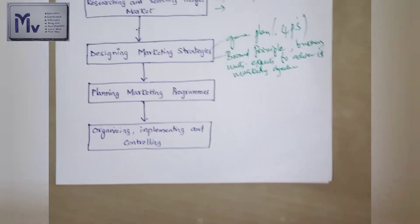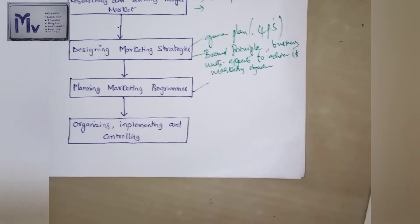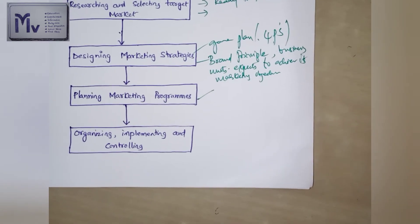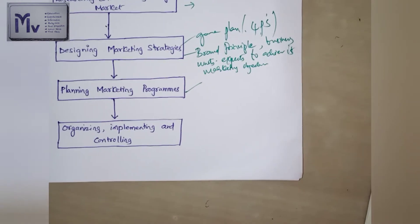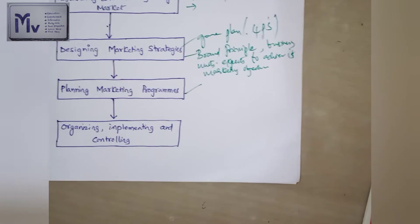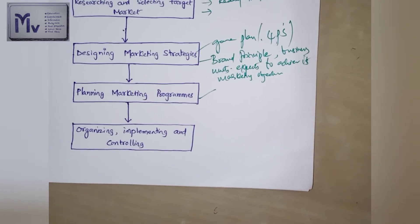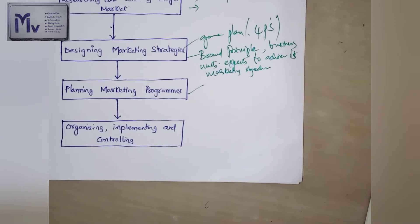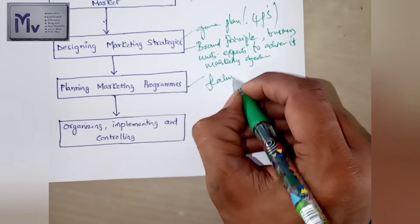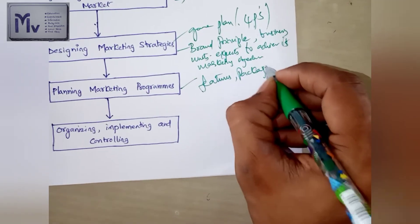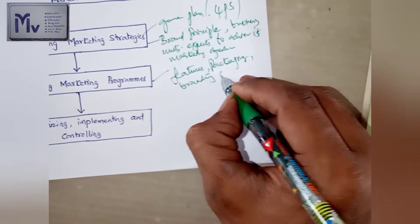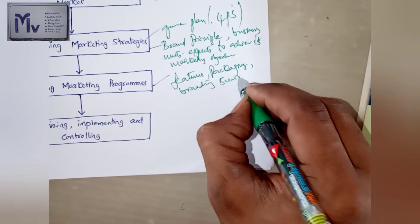The next step is planning marketing programs. It is not enough to formulate only the broad strategies; the business must also plan the supporting marketing mix programs. Without such programs, even the best conceived marketing strategy may fail. Here, decisions are taken regarding features, packaging, branding, credit terms, and service policies.